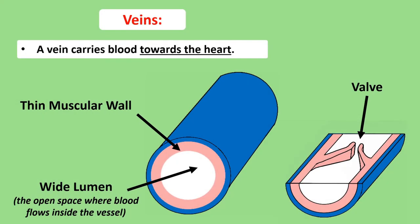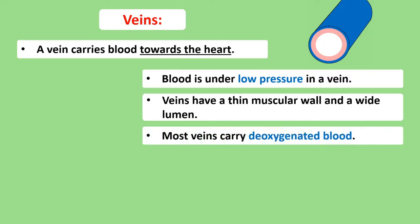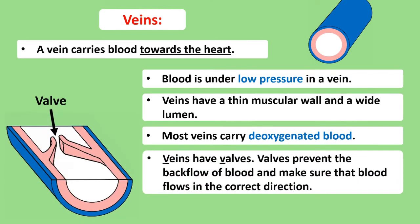In many ways, veins are the opposite to arteries. Their job is to carry blood towards the heart. Blood in veins is under much lower pressure than in an artery because the heart doesn't pump blood directly into veins. This means they don't need a thick muscular wall, and they have a wide lumen for blood to flow through. All veins in the body, with the exception of one, contain deoxygenated blood. Also, veins possess structures inside them called valves. These valves are important because they prevent blood from flowing back on itself, ensuring blood continues in one direction along the vein until it makes its way back to the heart.